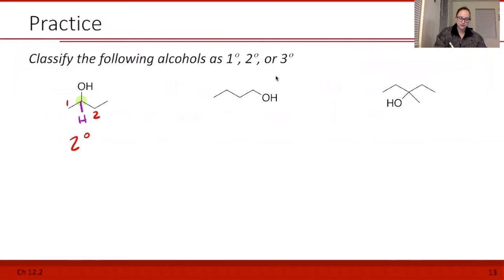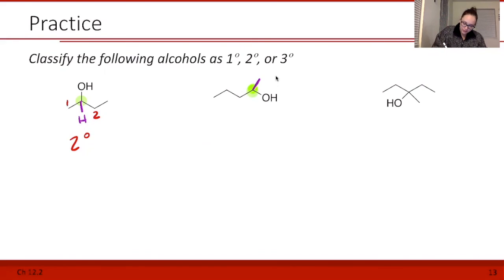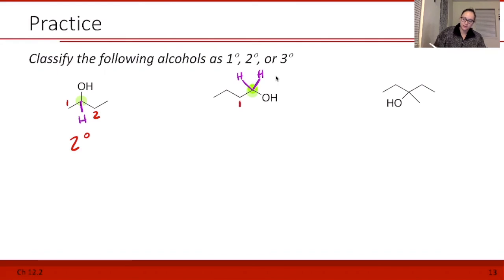Let's try the next one. I'm going to highlight the carbon attached to my alcohol and draw in all of my hydrogens. Right now I have two bonds to that carbon so I need two more, so that my carbon has four things attached. Now I count how many of those are carbons — not hydrogen. In this case we only have one, because we have two hydrogens on the other parts. So this is a primary alcohol.